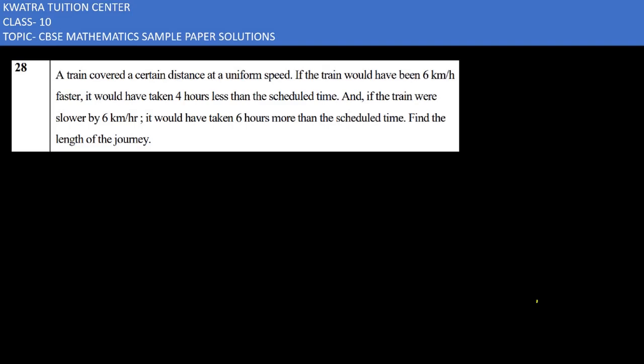So yes, we are moving to question number 28. In this it says a train covered a certain distance at uniform speed. Uniform speed means a value of speed. If the train would have been 6 km/hour faster, it means we're talking about speed. It would have taken 4 hours less. Here, we're talking about time. And if the train was slower by 6 km per hour, it would have taken 6 hours more than the scheduled time. Find the length of the journey. So what is our distance here?